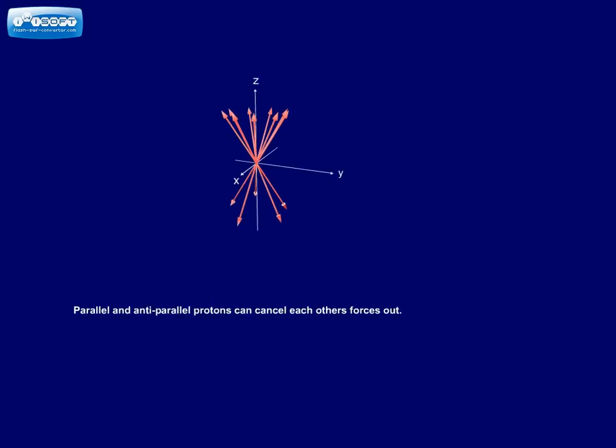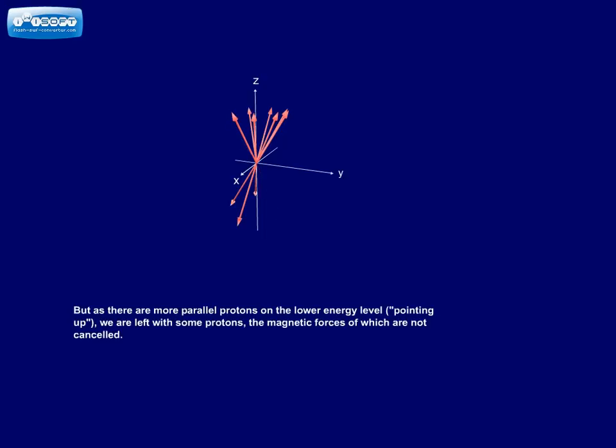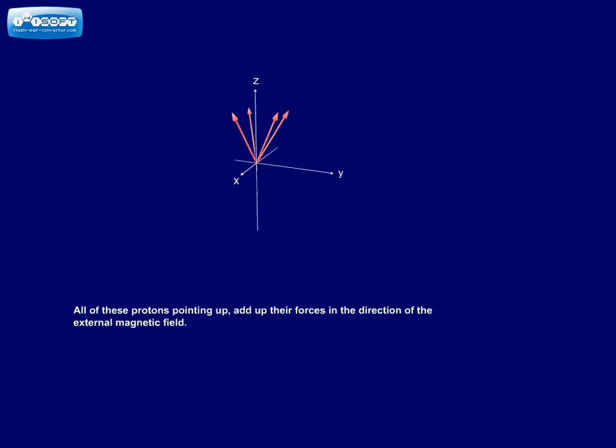Parallel and anti-parallel protons can cancel each other's forces out. But as there are more parallel protons on the lower energy level pointing up, we are left with some protons, the magnetic forces of which are not cancelled. All of these protons, pointing up, add up their forces in the direction of the external magnetic field.